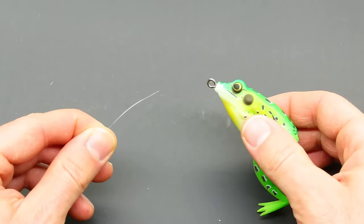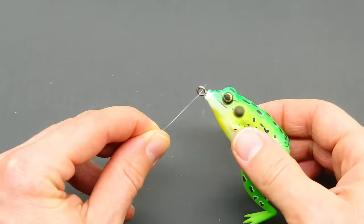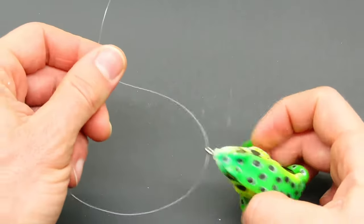Today I'm going to show you how to tie the improved clinch knot, also called the fisherman's knot. You can start by placing the line through the eye of the hook or the lure.